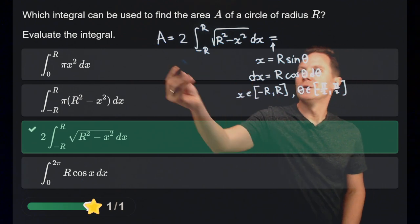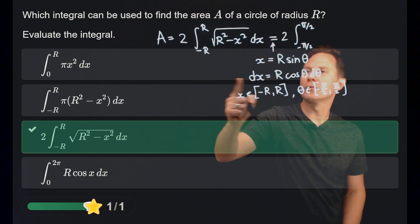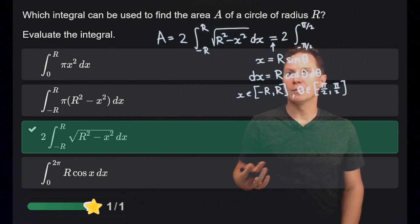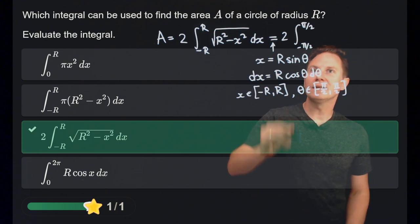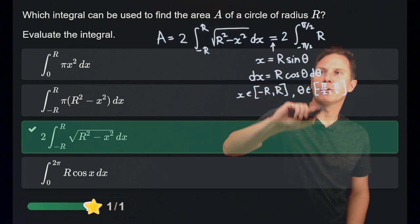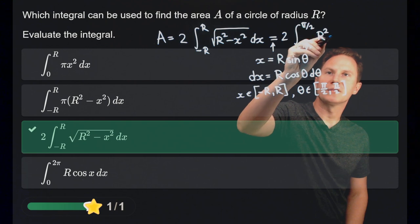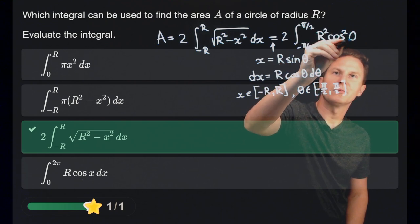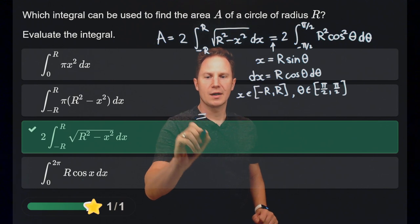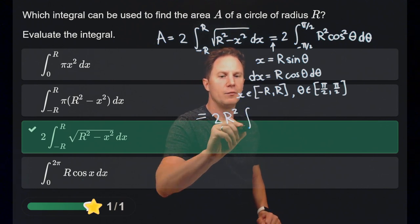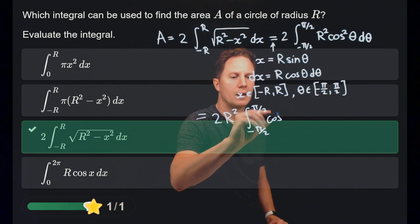We get twice the integral from negative pi over 2 to pi over 2 of: the square root of r squared minus x squared, with x equals r sine theta, gives r times cosine of theta by trigonometric identities. From the dx we get another factor of r times cosine of theta, giving r squared times cosine squared of theta d theta. Pulling out r squared, we are left with the integral from negative pi over 2 to pi over 2 of cosine squared theta d theta.